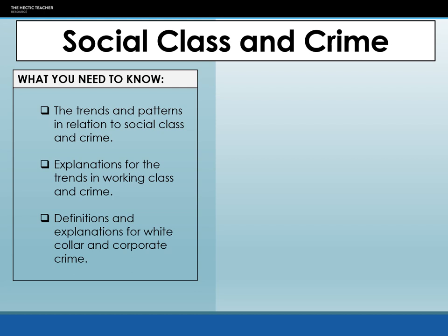In this lecture I'm going to take you through the social class and crime section of the specification. We'll be covering trends and patterns in relation to social class and crime, some of the probable issues that arise with that. We'll then focus in on working class crime and explanations for the trends in working class crime, before looking at the explanations of white collar and corporate crime and why perhaps we see more middle class and upper class people engaging in that behaviour.